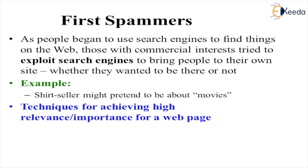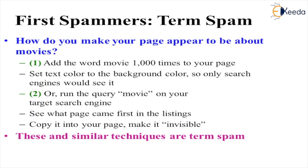For example, a shirt seller might pretend to be a movies page — their website pretends to be a movies website. To achieve a high ranking, they used a technique called term spam. They would add the word 'movie' one thousand times to their page and set the text color to the same as the background color, so only search engines would see it. If any word appears one thousand times on a page, the search engine thinks that page is about that topic.